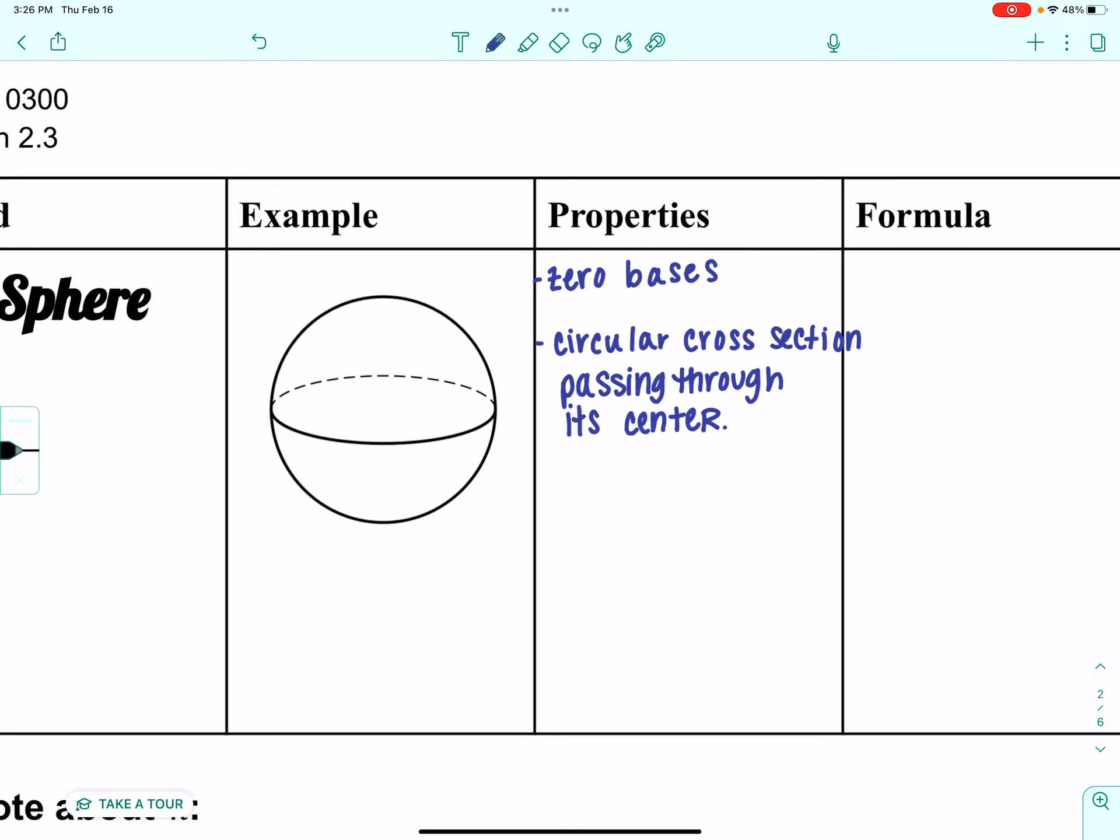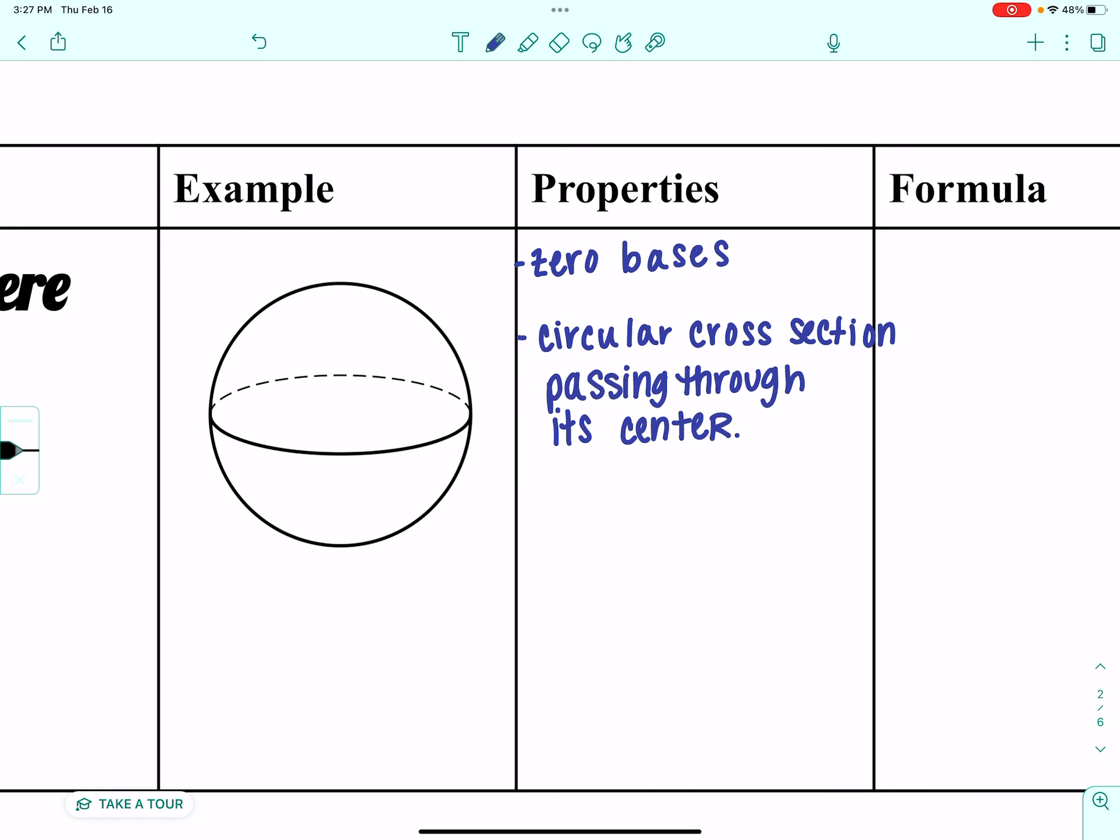What I mean by that is if I were to cut my cylinder all the way through and open it up, I would have two congruent circles. And that circle that goes right through the center of the sphere is going to be where we get our information from.